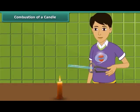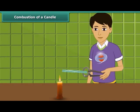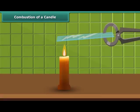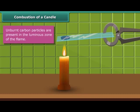Let us watch Rohan performing an activity. He is introducing a glass plate into the luminous zone of the candle flame with the help of a pair of tongs. The glass forms circular blackish spots, indicating the presence of unburnt carbon particles present in the luminous zone of the flame.